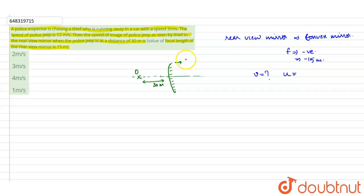The mirror is moving with a velocity of 3 meters per second because it's fixed with the car. The object, the police jeep, is moving at a velocity of 12 meters per second. Since this direction is taken as negative from the mirror, we have the object distance to be minus 30 meters.